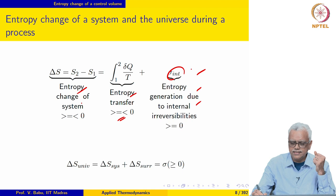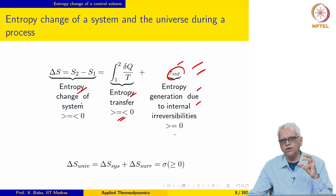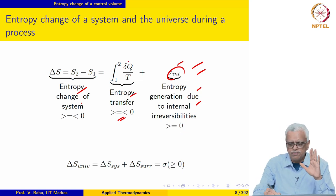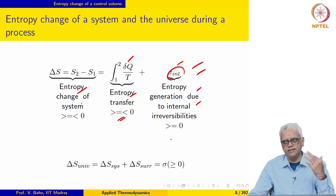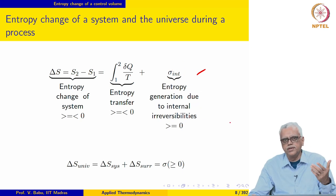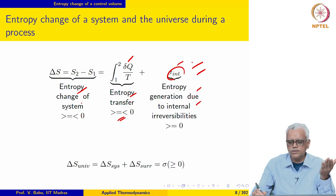This expression is not useful for calculating a numerical value for entropy change of a system because there is no expression for calculating σ_int. Sigma_int is a notion of internal irreversibility; the only thing we know is that it is positive or equal to zero, which may be very difficult to compute. The usefulness of this expression lies in being able to tell whether the entropy of the system is going to increase, decrease, or remain the same.